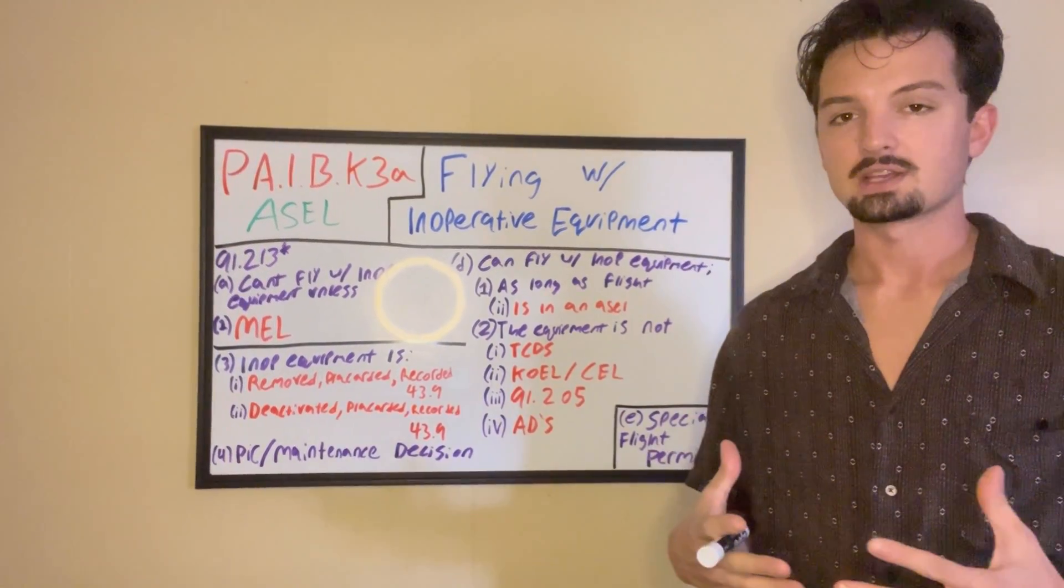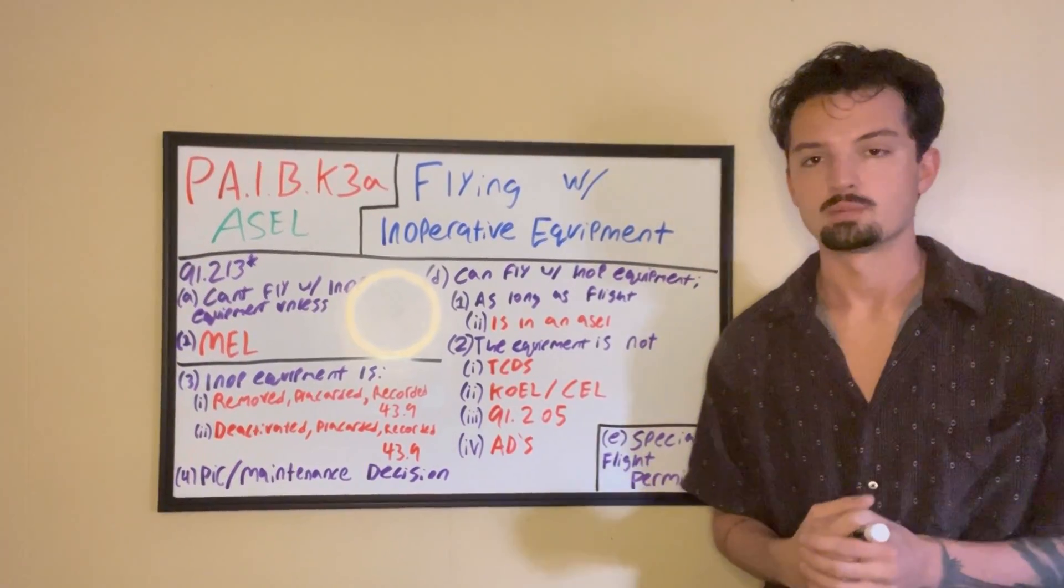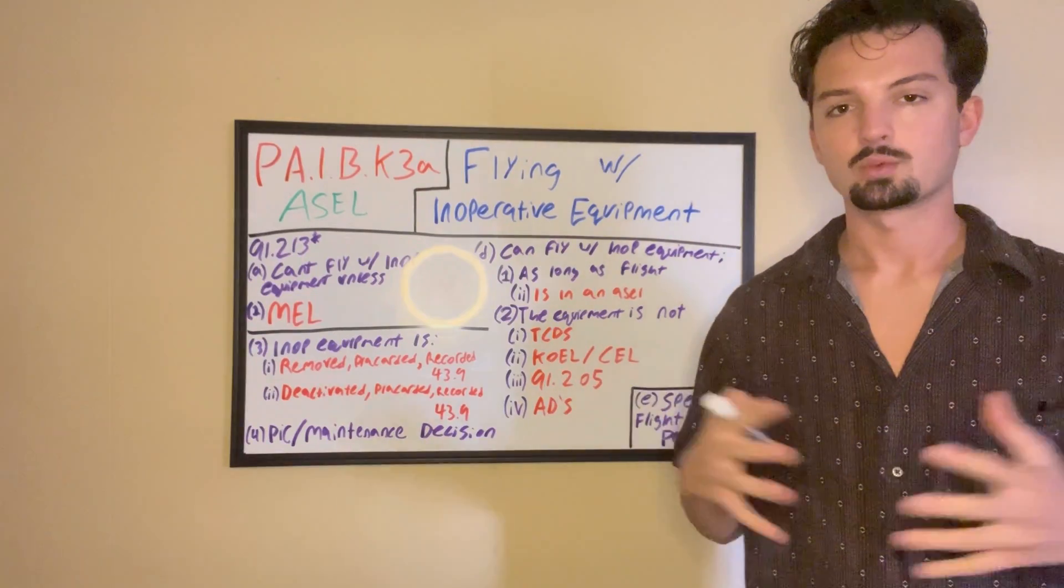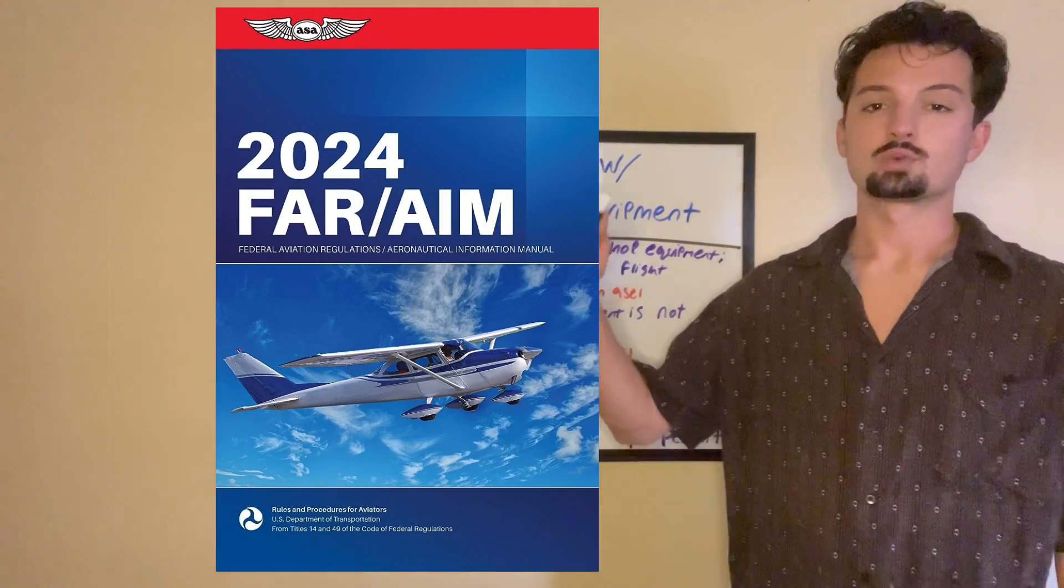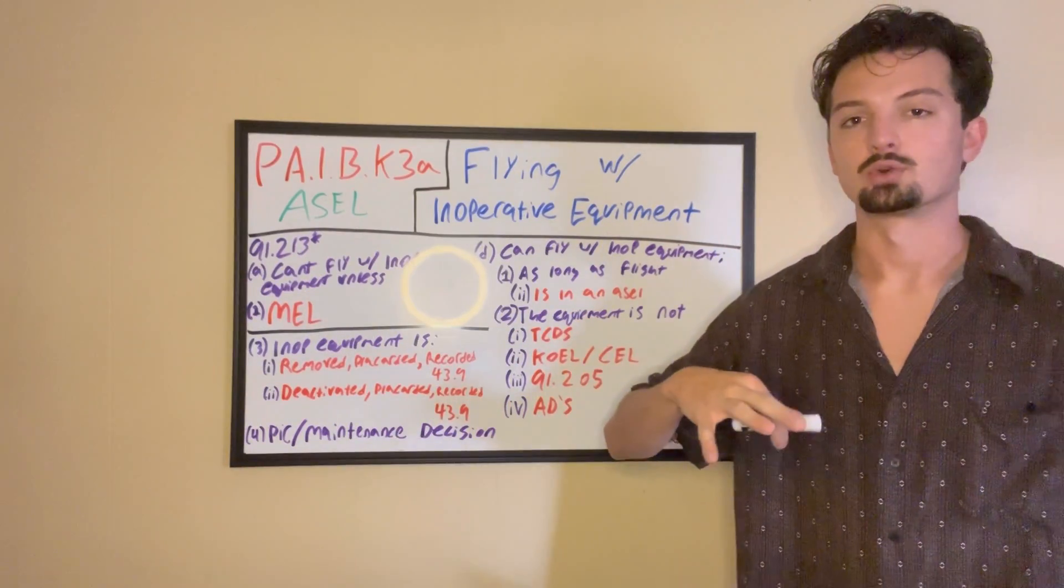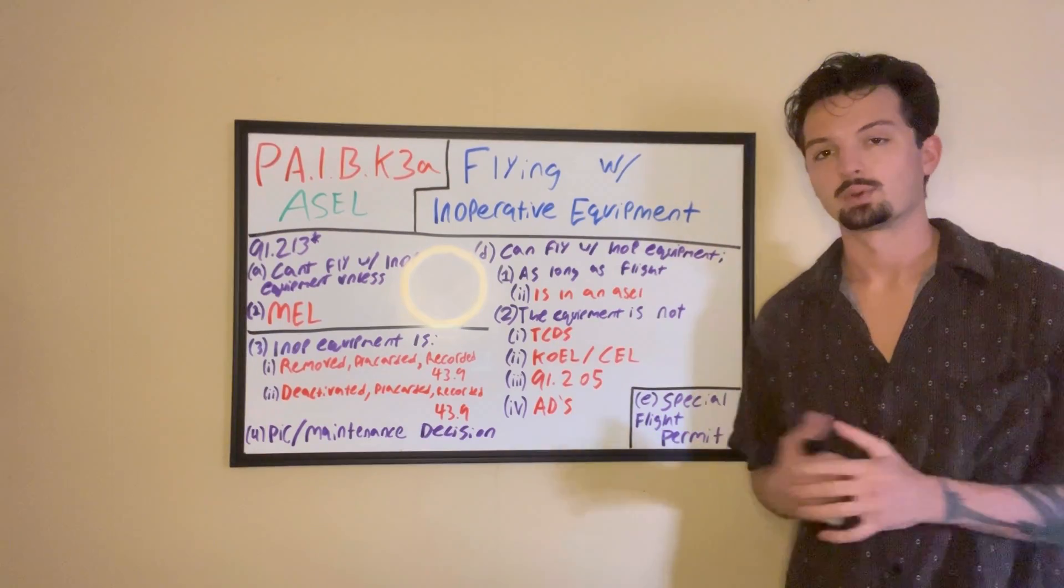Here's our code for today, and guys, the one regulation that you're going to need that covers all of flying with inoperative equipment is 91-213. Once again, we're working out of the FARAM. Soon we're going to be doing task C, which is much less of the FARAM and much more conceptual information. But for today, we're still in the regulations.